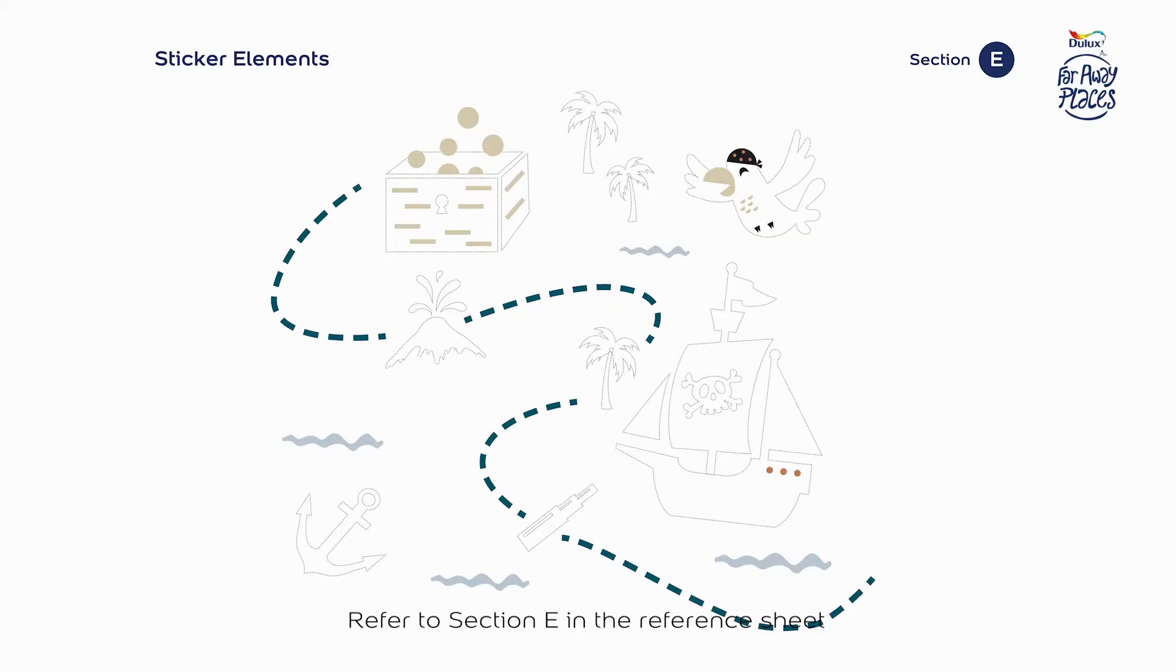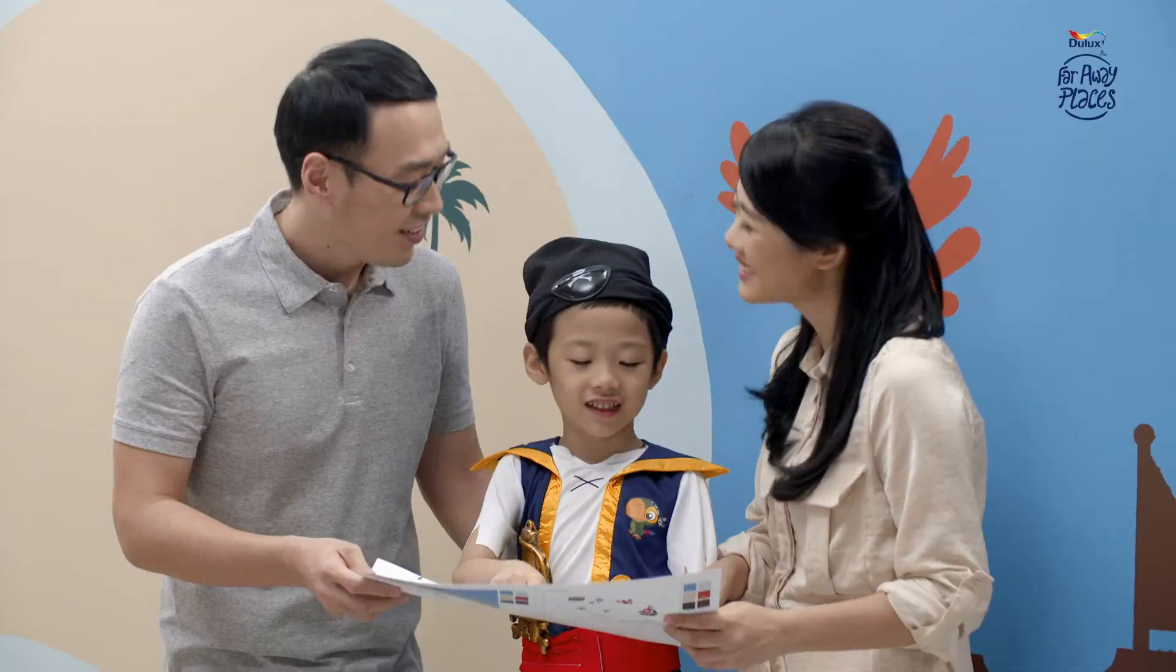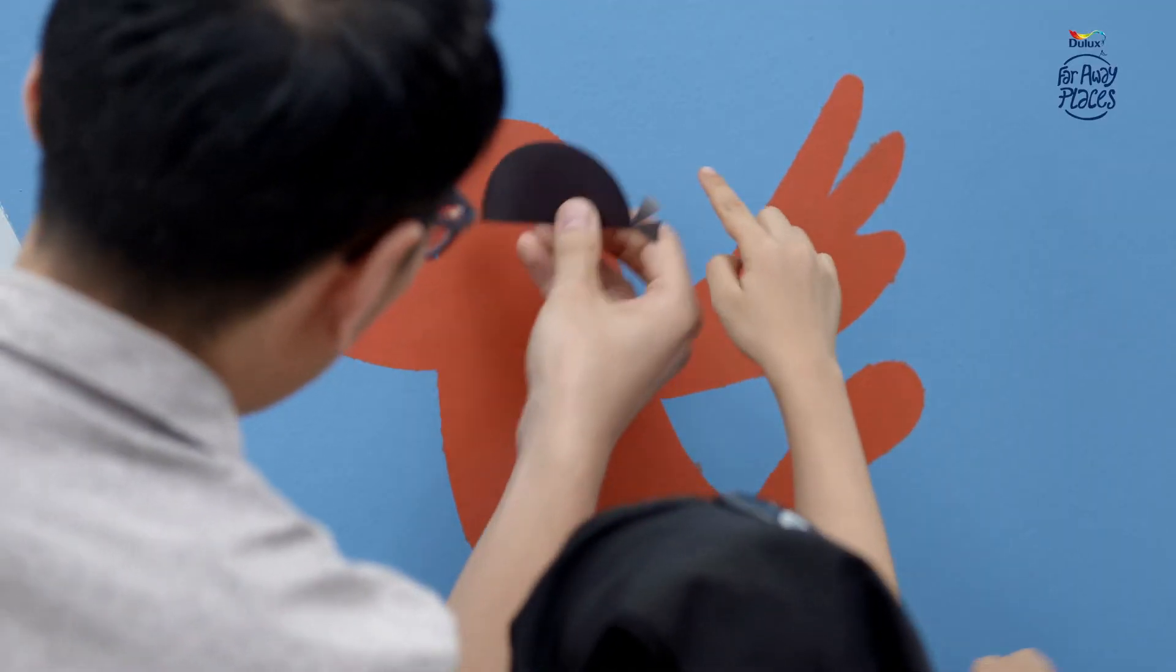Step 4 is the final step where we put the stickers on the stencils. When the paint has dried, simply place the stickers on the stencils as shown in the reference sheet.